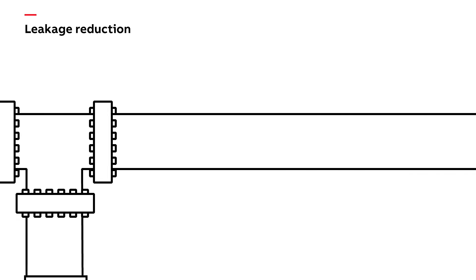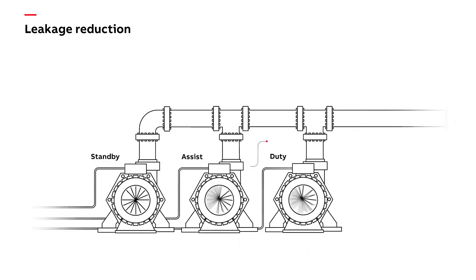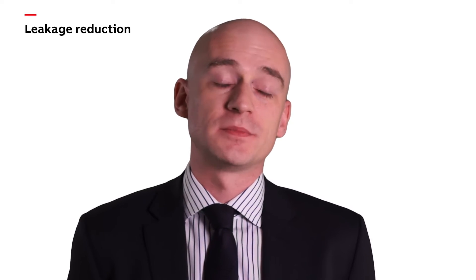Pressure is provided to mains water systems by one or more pumps. Pump capacity is usually selected based on the maximum flow or head required. However, average demand can be much lower than this.